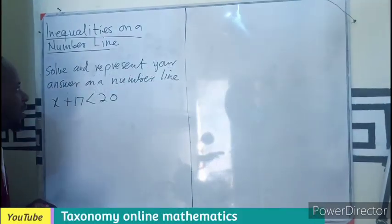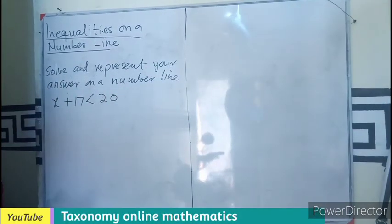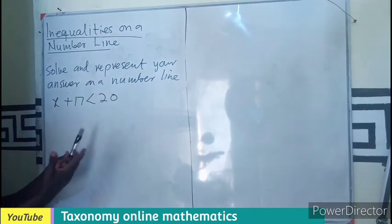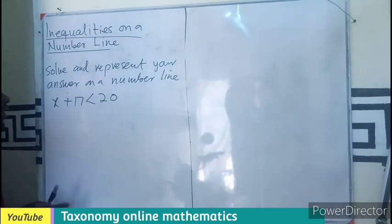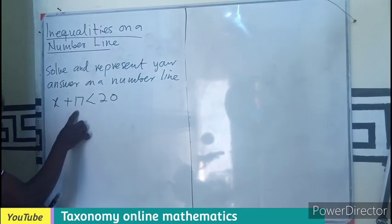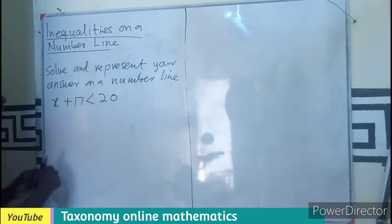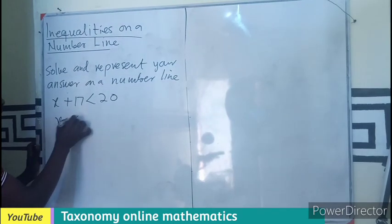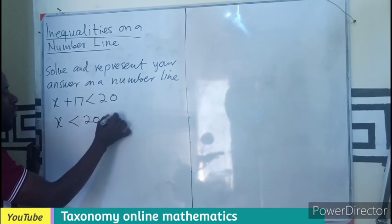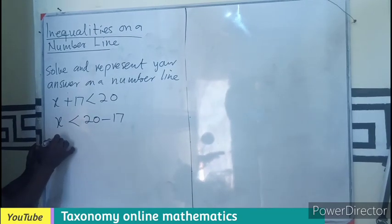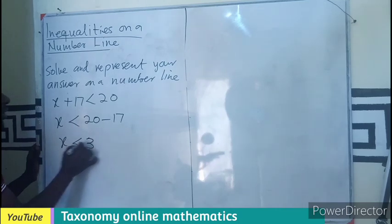Let's see how we can solve this. We have to solve and represent on a number line. So, we solve as the steps we know in inequality. Subtracting 17 from both sides gives us x less than 20 minus 17, which means that x is less than 3.